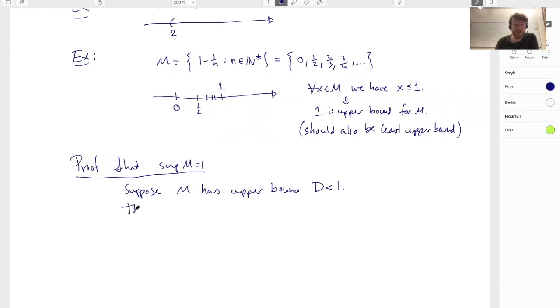Then if this is the case we know that d is bigger than every element of M which can be described like this: d is bigger than one minus one over n for every n in the natural numbers that are non-zero.